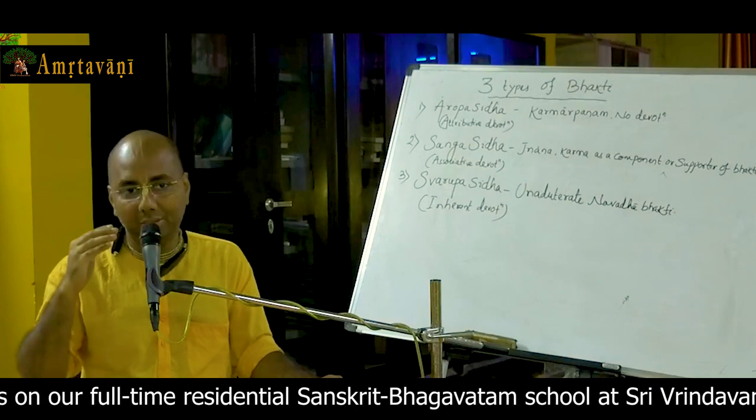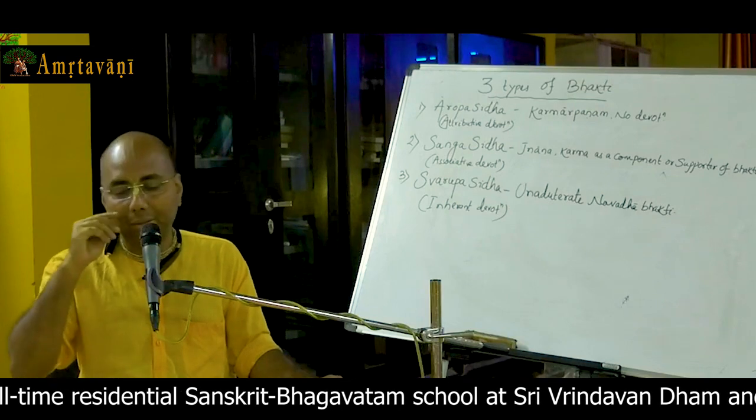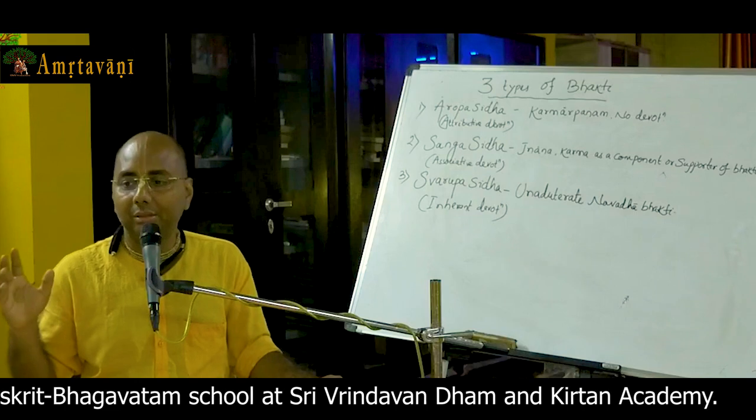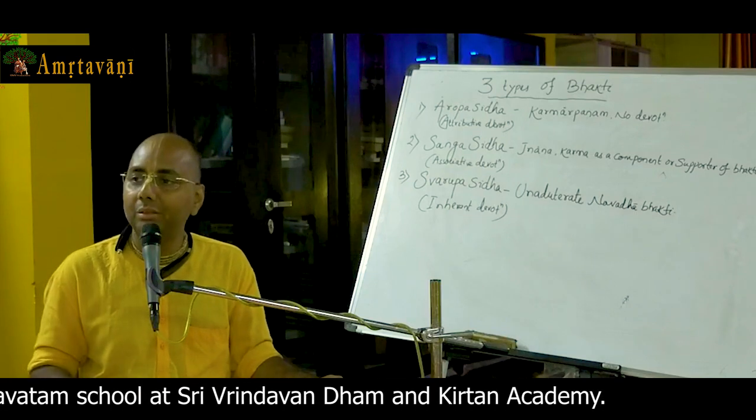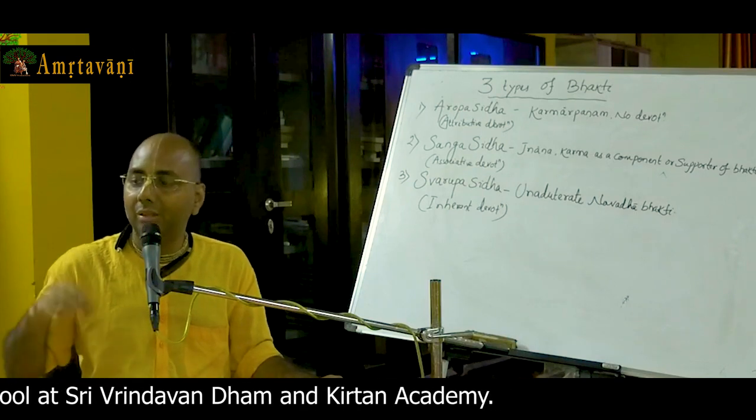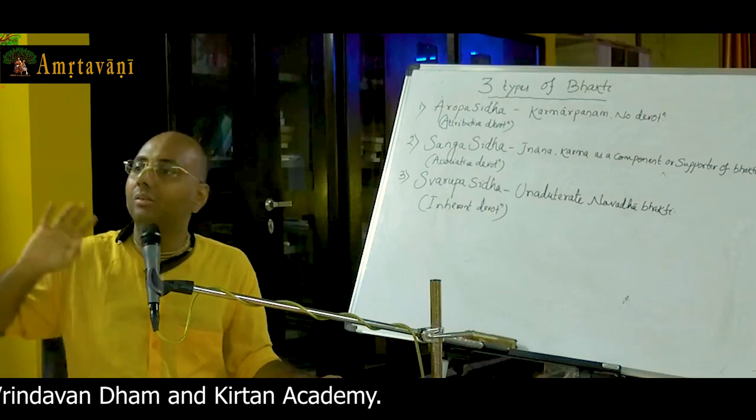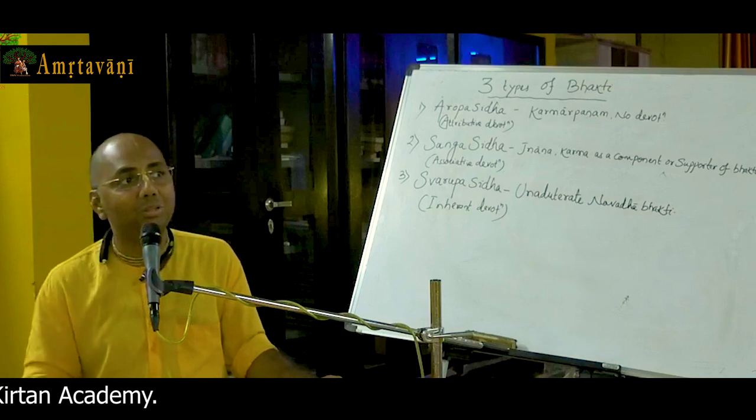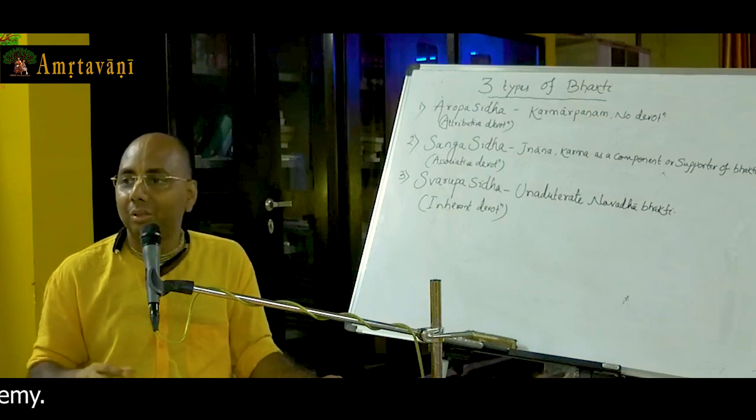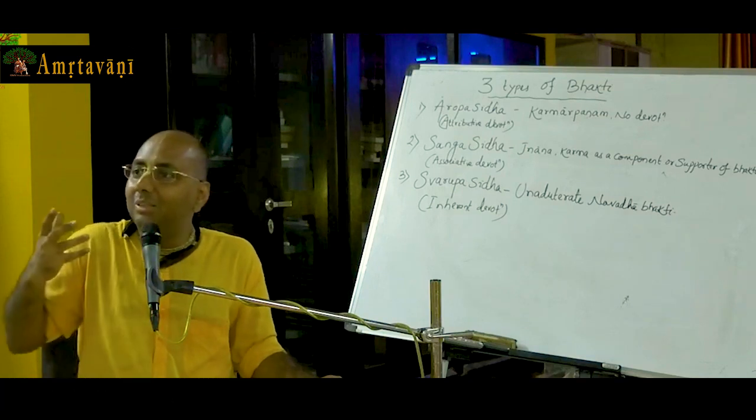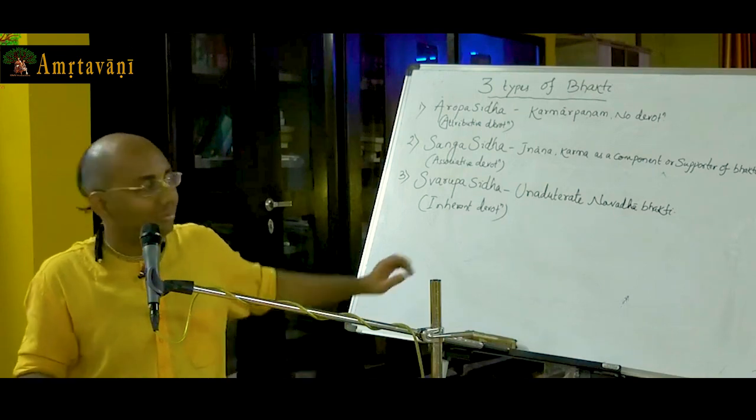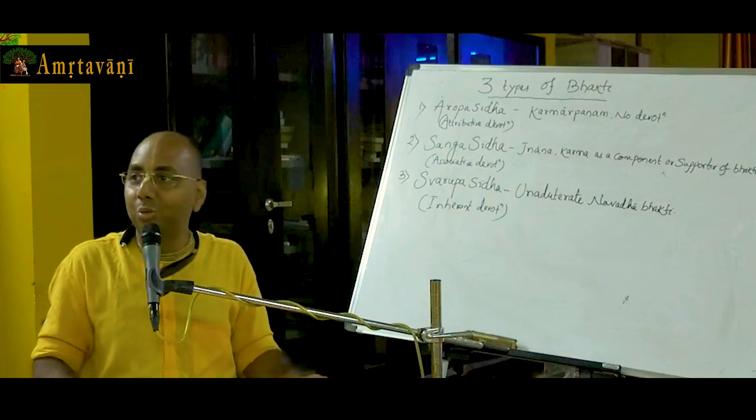And the last one is, ultimate is Swarupa Siddha bhakti. Means without any kind of jnana or vairagya, jnana or karma, mixed of jnana or karma, unadulterated navada bhakti, just for the pleasure of the Lord. And in that state, the person, the sadhaka, he is having thousand rupees in which jnana, karma, vairagya, hundred rupees are included. He is having that much devotion. The waves of devotion is arousing in the heart constantly.